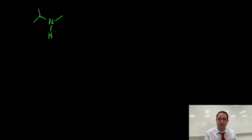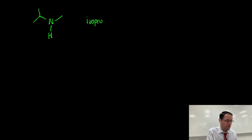Now if you have two groups attached, you need to alphabetize it. So we have a methyl group and then an isopropyl group. In alphabetization, iso comes first, so we would name this isopropylmethylamine.